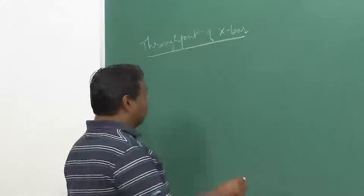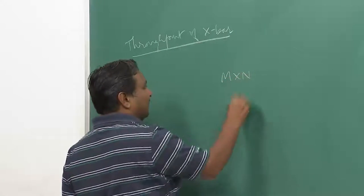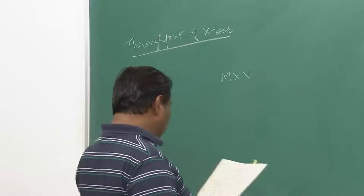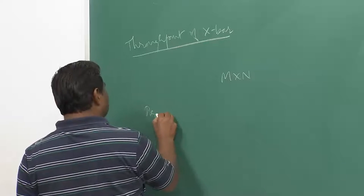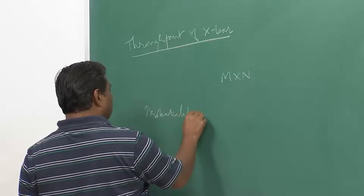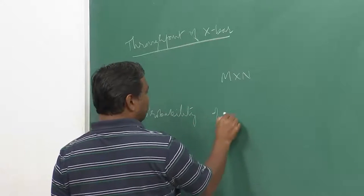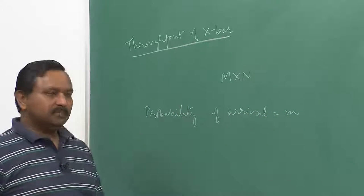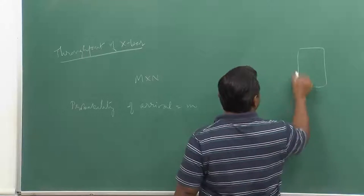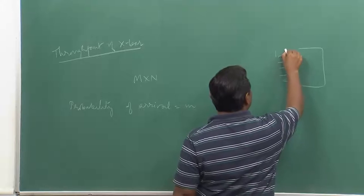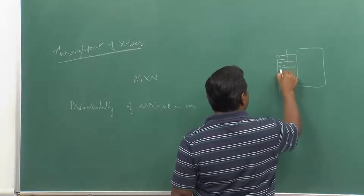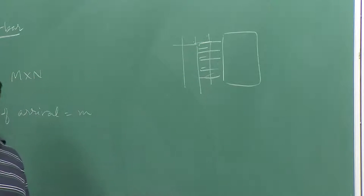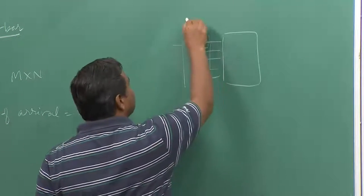The crossbar is of size m by n — it is an m by n crossbar and it is a packet switch. I need to find out what the throughput at the output will be. The probability of packet arrival at the input is m; it is a slotted system. In one slot, packets arrive at various input ports; in the second slot, a new set of packets arrives, and the probability that a packet will be present in a slot is given by m.